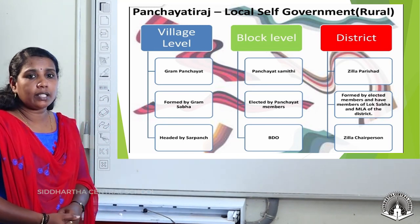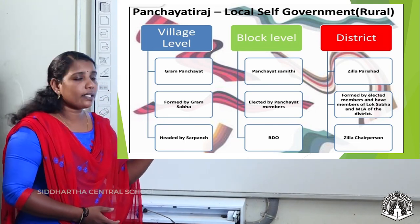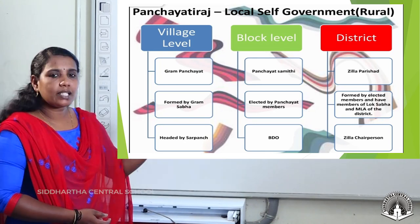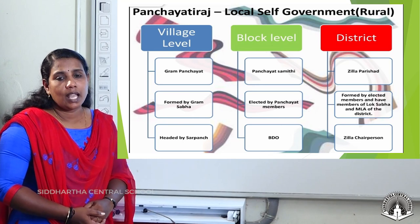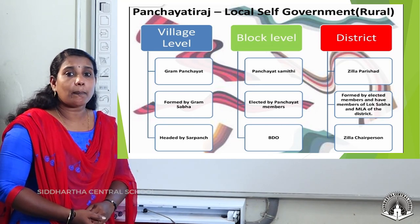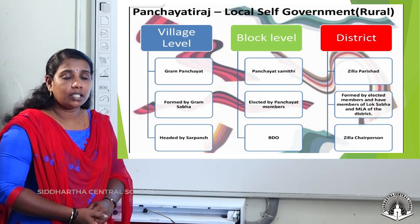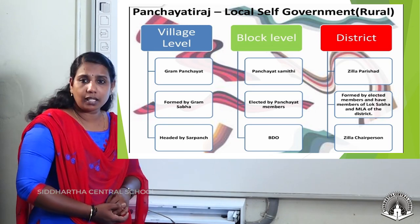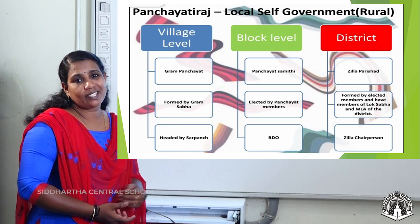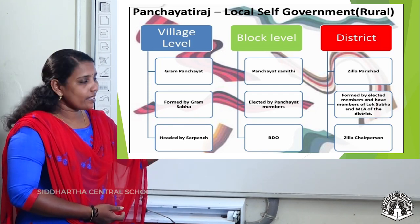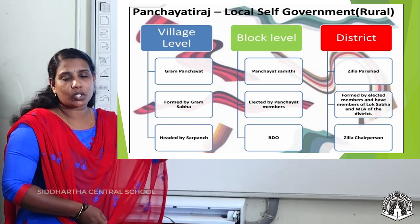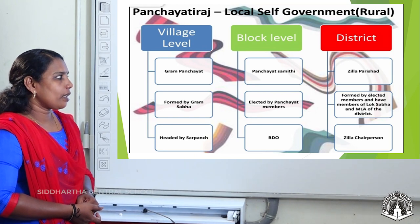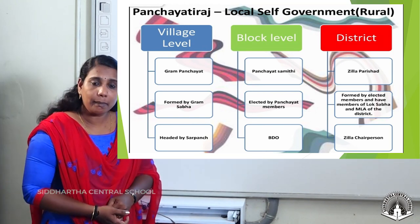Then, at the next level — the block level — several Gram Panchayats together constitute the Panchayat Samiti, also known as Block or Mandal. The members of this elected body are elected by the Panchayat members. The head of this local government body is the Block Development Officer. Then, several Panchayat Samitis together form the district-level body: Zila Parishad. The members of the Zila Parishad are elected members and members of the Lok Sabha, as well as MLAs of that particular district.